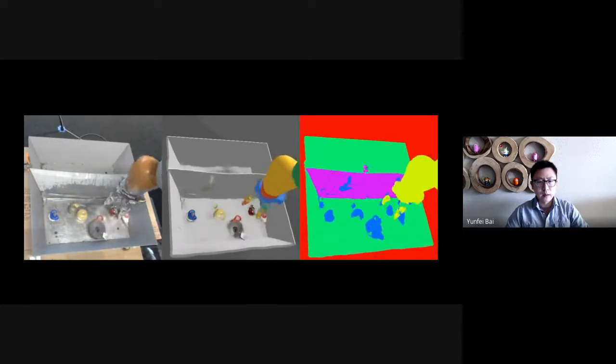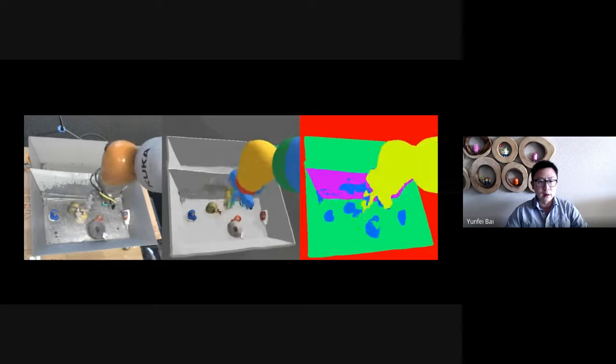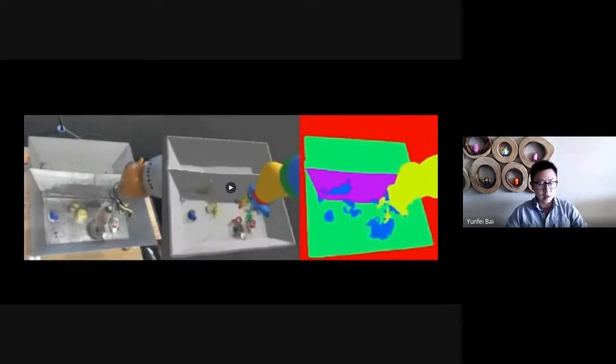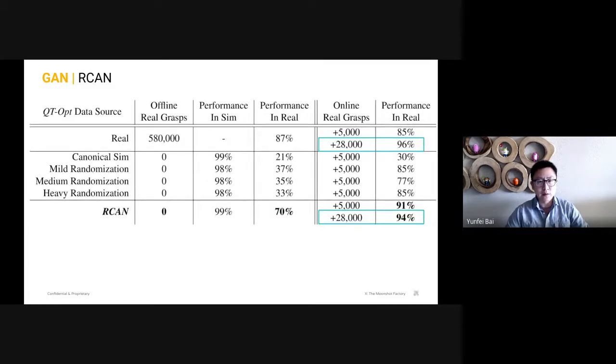More importantly, how well does it work for real world image? You can see in the video here, the input is on the left and the generated one is in the middle. It works pretty well to convert the real world image to this canonical sim image. Here are the results for the grasping task. With domain randomization, it doesn't transfer well on the real robot and only achieved around 30% grasp success rate. But with RCAN, it can achieve 70% without seeing any real world data. With fine tuning, with just domain randomization, it was able to achieve 85% grasp success rate. With RCAN compared to the original QtOpt, it can achieve similar success rate but without using that 600,000 real world data. Basically, this helps us save three months of data collection.